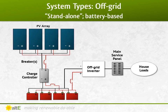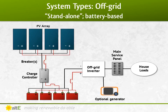Off-grid systems consist of the solar panels, the charge controller — which manages charging the batteries — the battery bank, and if AC devices are used, an inverter to convert the DC power from the batteries to AC, like you have available in the wall sockets. Many off-grid systems have a backup power source like a generator for times when the sun is not providing enough power for your needs.